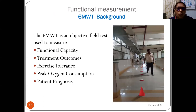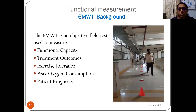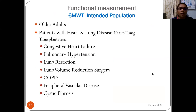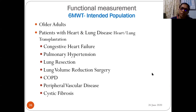The six-minute walk test (6MWT) is an objective field test used to measure functional capacity, treatment outcomes, exercise tolerance, submaximal oxygen consumption, and patient prognosis. It is indicated for older adults and patients with heart and lung disease, heart-lung transplantation, congestive heart failure, pulmonary hypertension, lung resection, lung volume reduction surgery, COPD, peripheral vascular disease, and cystic fibrosis.